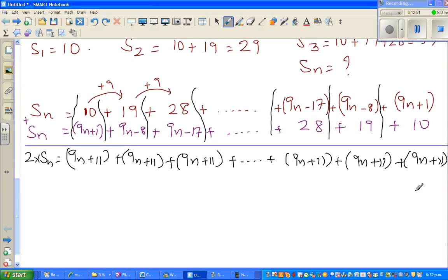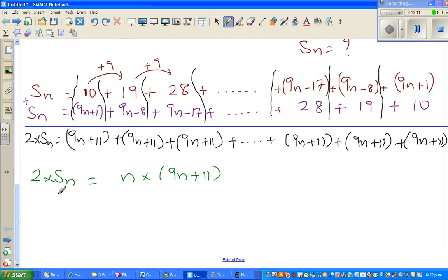So how many lots of 9n plus 11 are in this addition? You can see you've got n lots. So I can say 2 times Sn is equal to n times (9n plus 11). If you divide both sides by 2, this and this gets cancelled. So Sn is n times (9n plus 11) divided by 2.